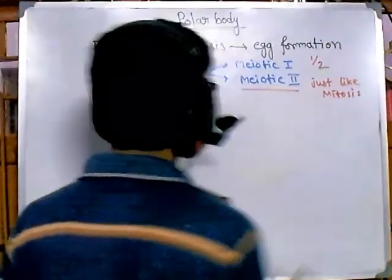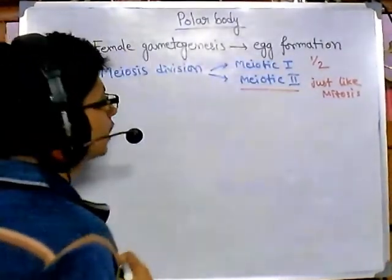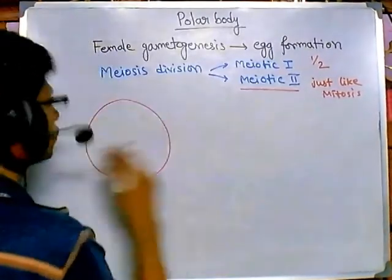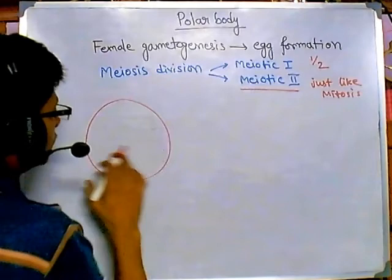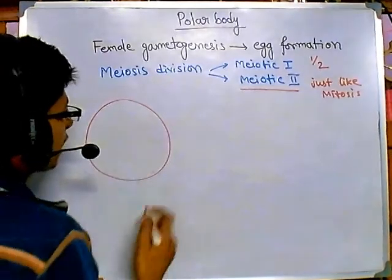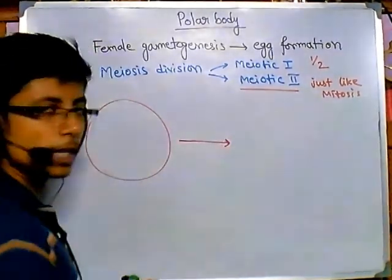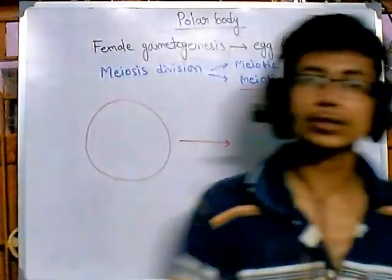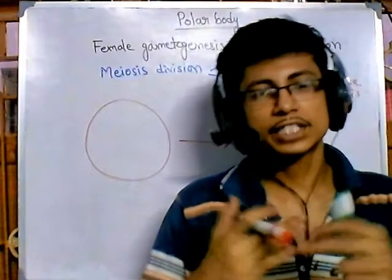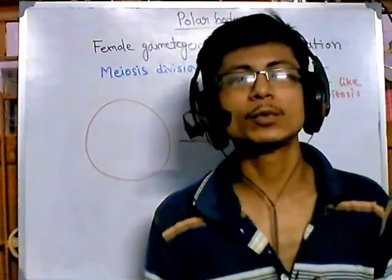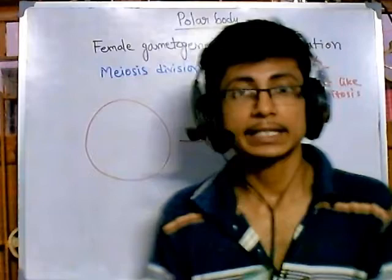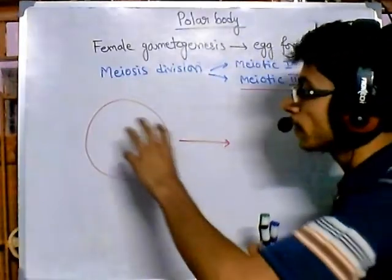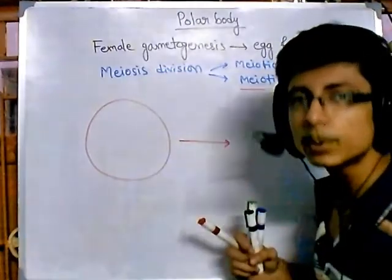Now what actually happens in meiotic 1 division: if I draw this egg — the egg is not actually formed yet, but during the formation it is having its own chromosomes. During this meiotic division, in the first meiotic division, the transfer of chromosomes occurs, but the sharing of cytoplasm is always unequal. Remember — always the sharing of cytoplasm during cell division of female gamete production is always unequal.